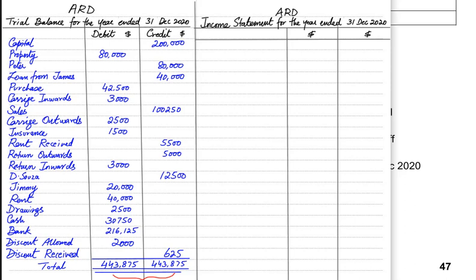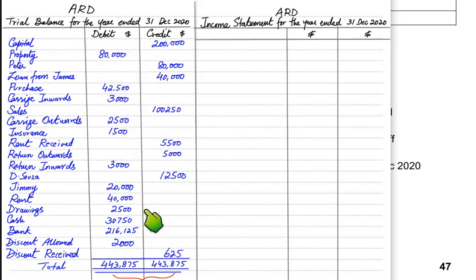To prepare an income statement, we must have already prepared a trial balance, or the trial balance may be given by the examiner. As you can see, we have already made the trial balance for our exercise, and with the help of this trial balance, we are now going to make an income statement.